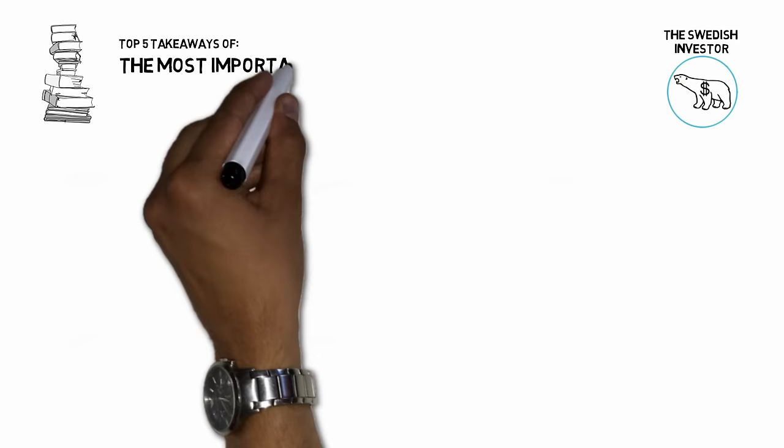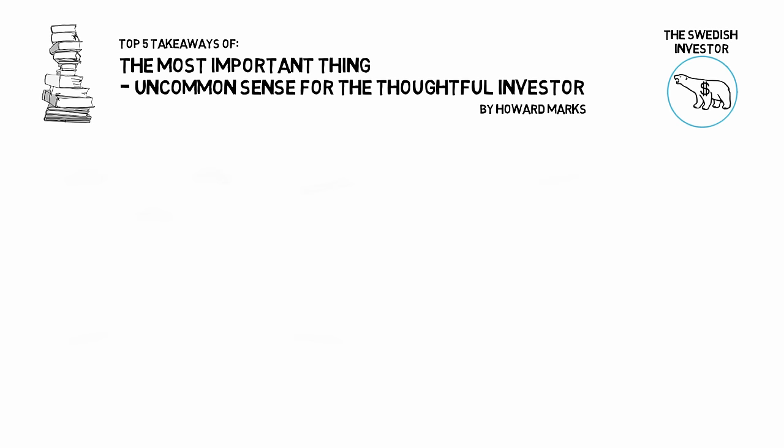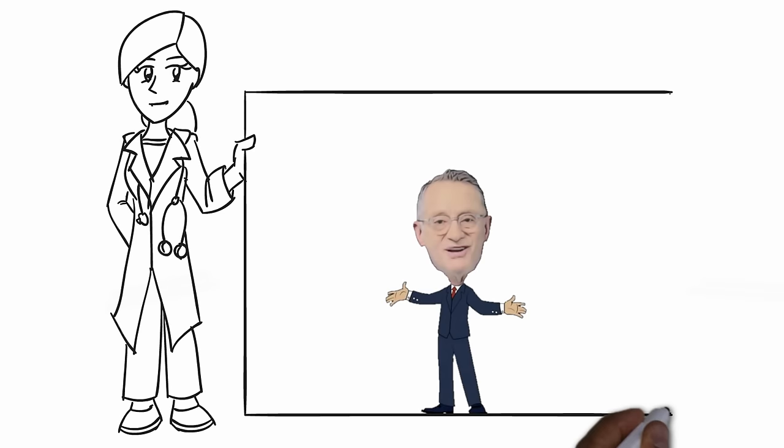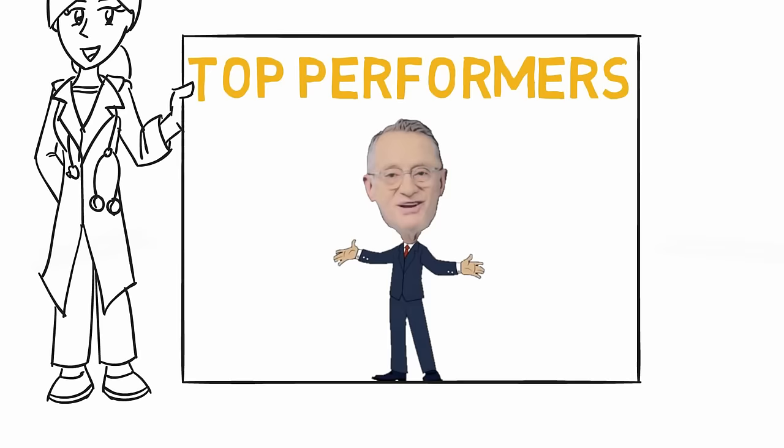In this video, I will present the five main takeaways from The Most Important Thing: Uncommon Sense for the Thoughtful Investor, written by Howard Marks. For those of you who don't know him, Howard Marks is one of the greatest investors of all time and he has a track record similar to Warren Buffett and Peter Lynch.